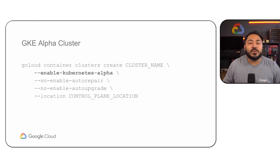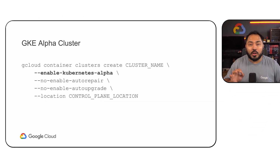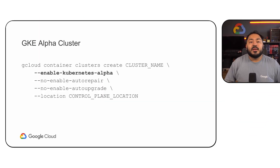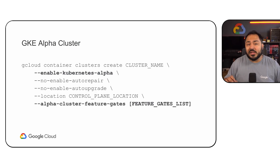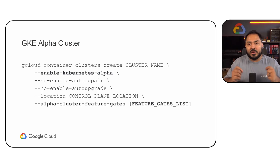GKE alpha clusters with feature gates is now GA. Previously you could only create an alpha cluster which enabled all Kubernetes alpha features, which could lead to instability. Now you can use the gcloud CLI to select which specific features to enable, giving you more granular control.